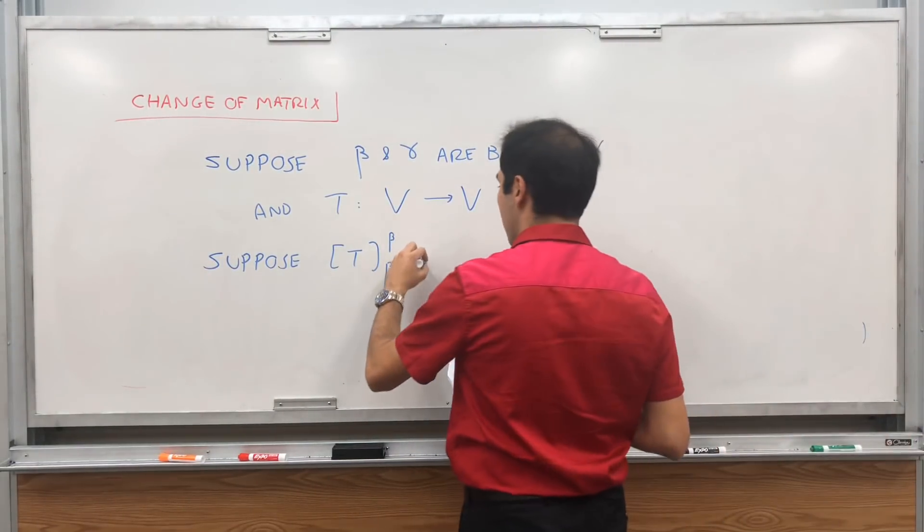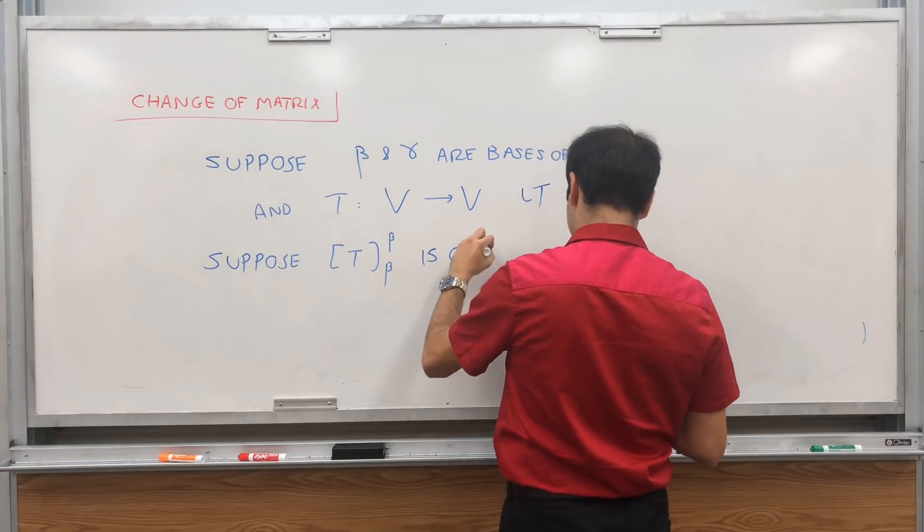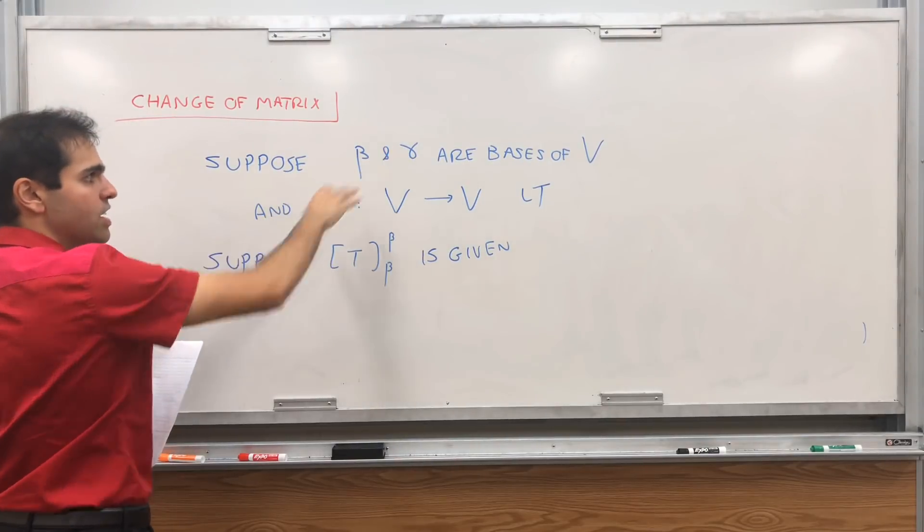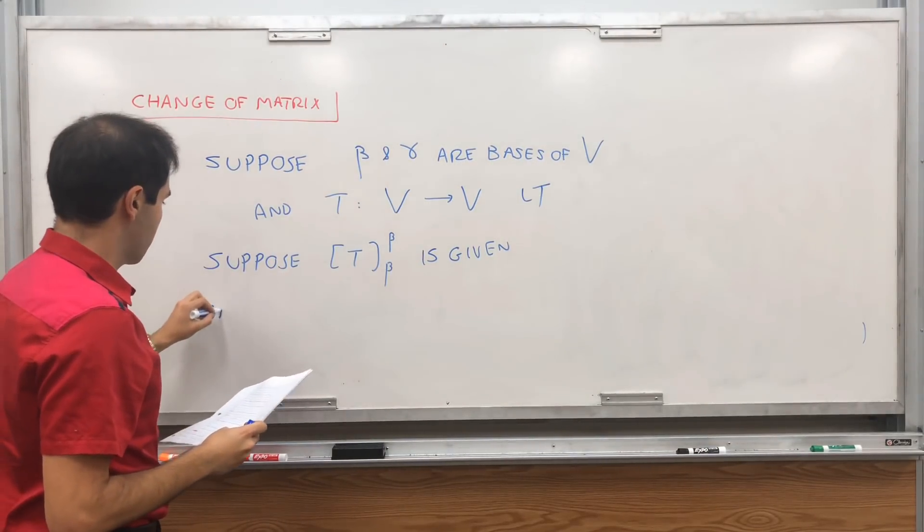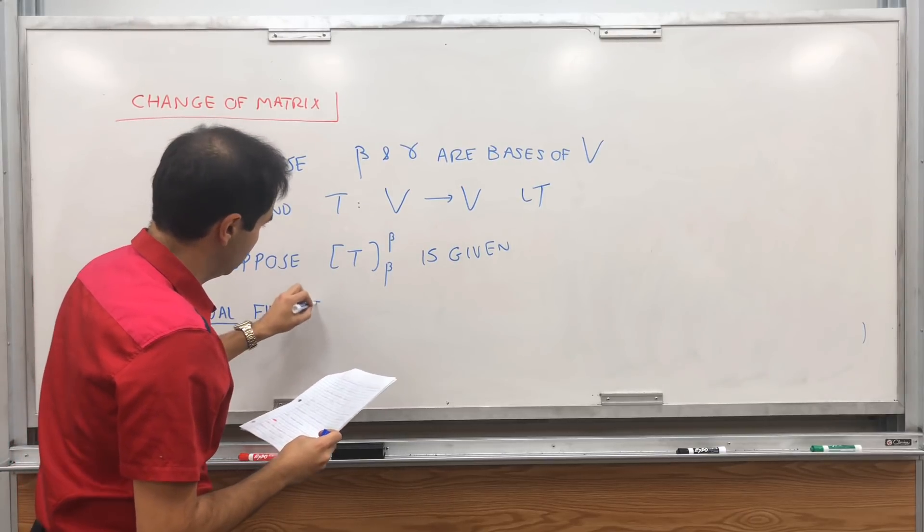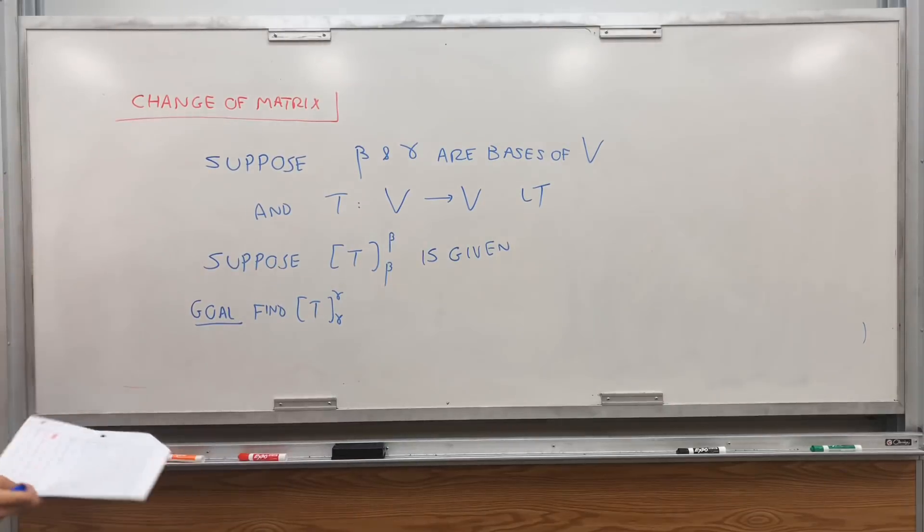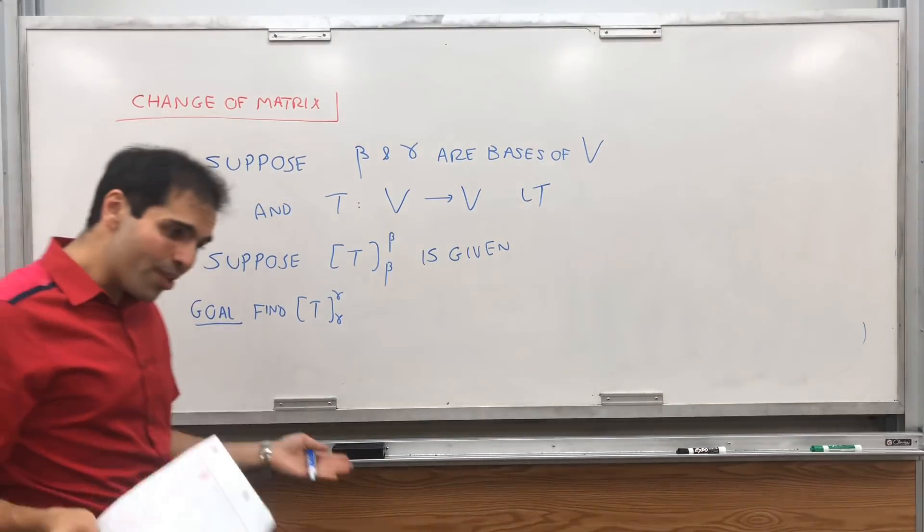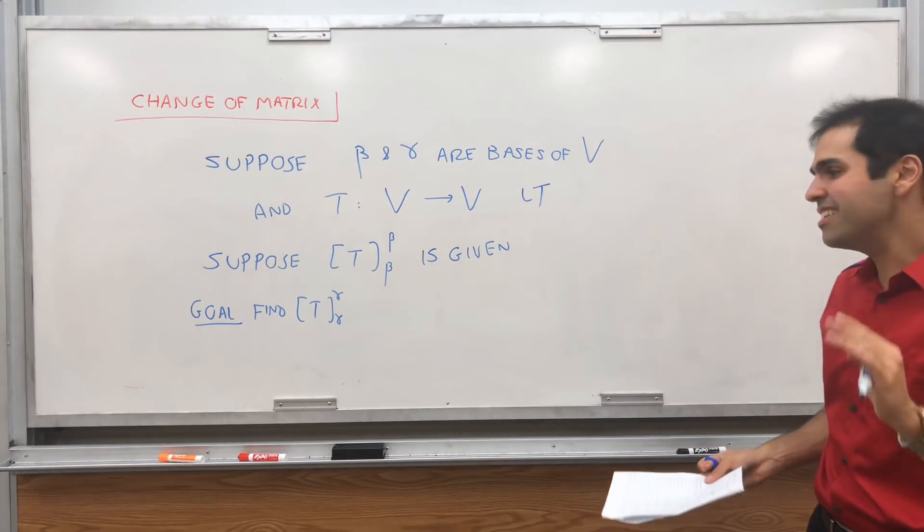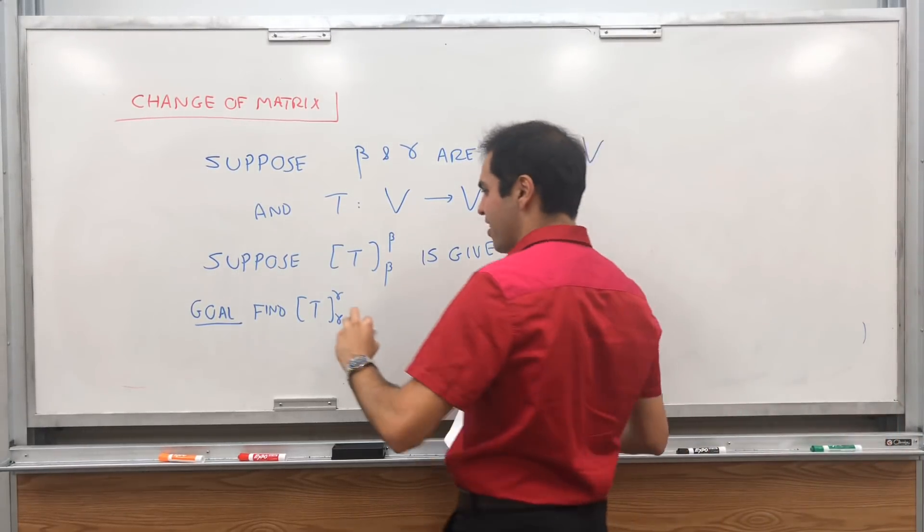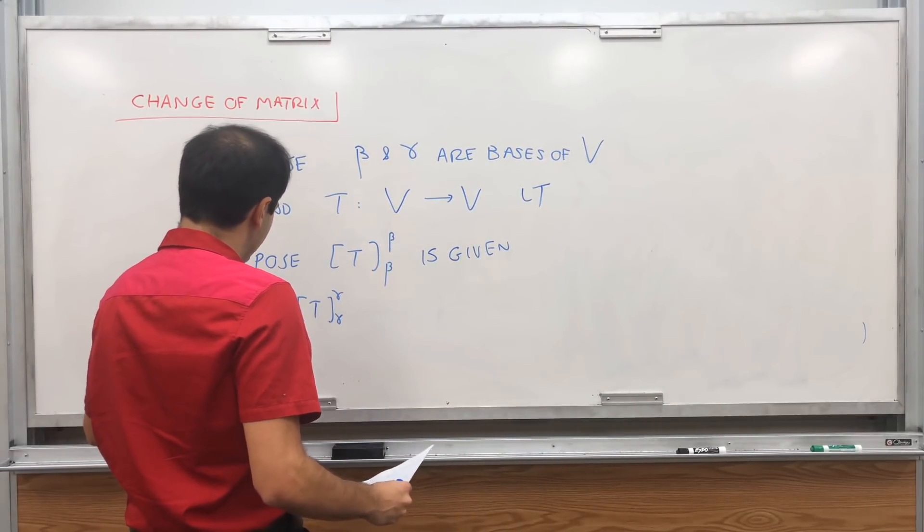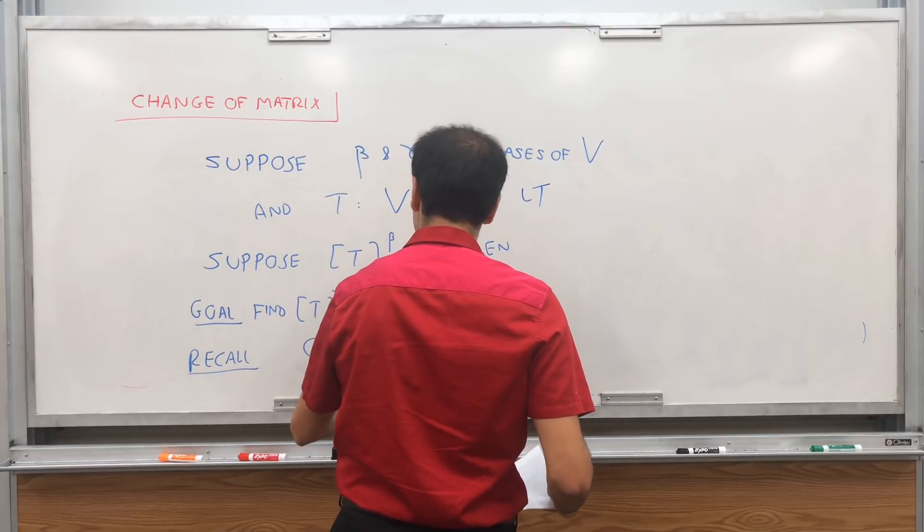I will give you a concrete example at the end. So suppose you have this old matrix. The question is, how do we find a new matrix? Go find T from gamma to gamma. And it turns out you can write this in terms of change of coordinates matrices. Recall there's something called the change of coordinates matrix.